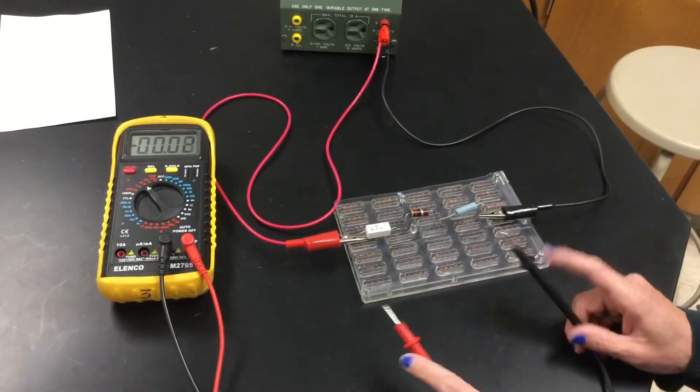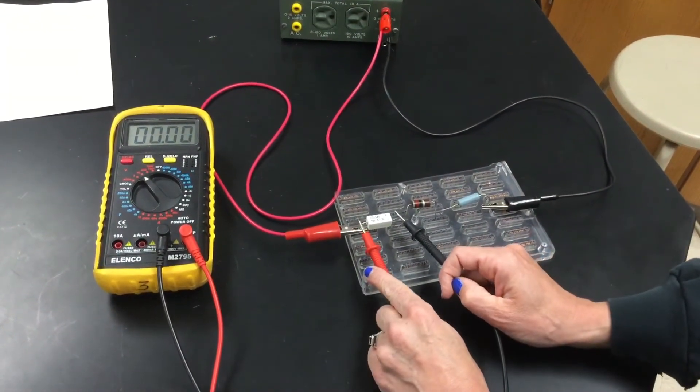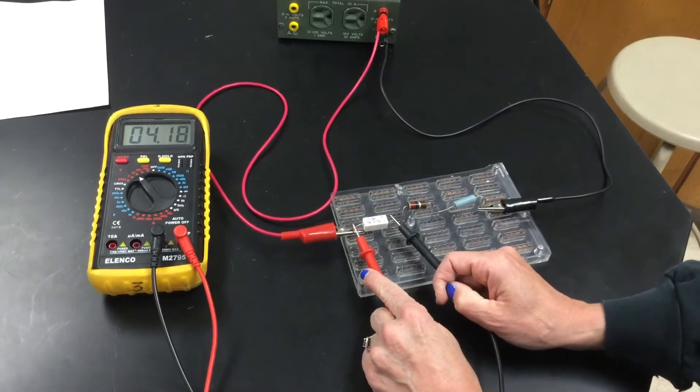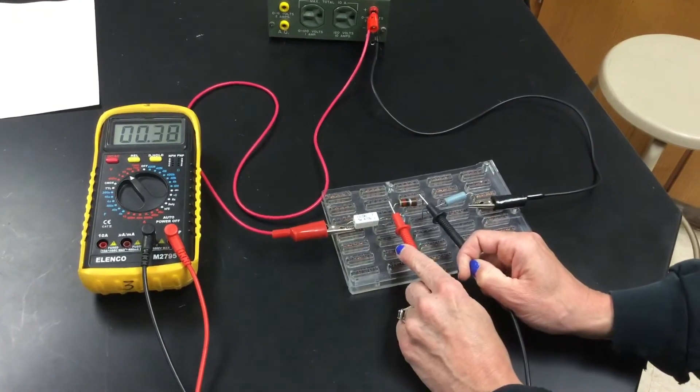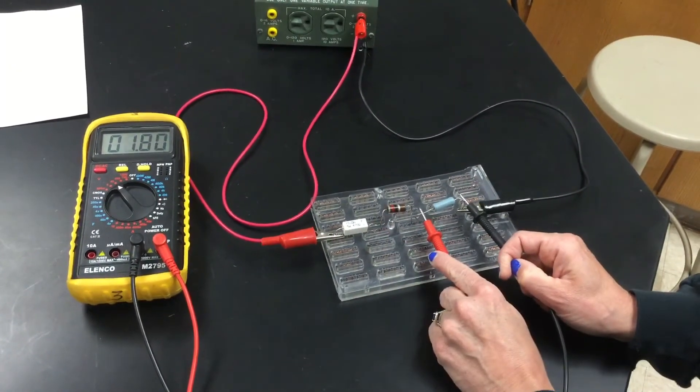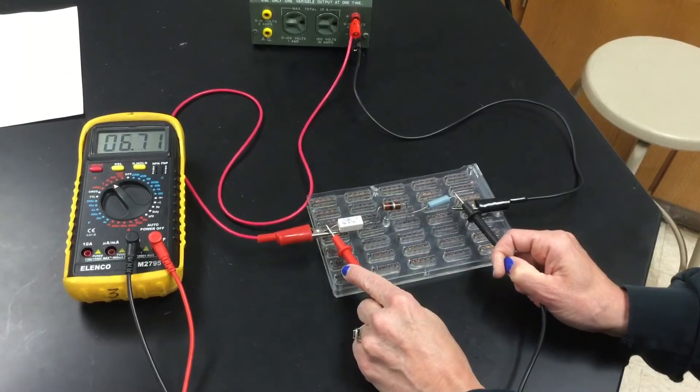And just like resistance, to find the voltage across the first resistor, you just simply do this. So that's V1, V2, V3, and V total.